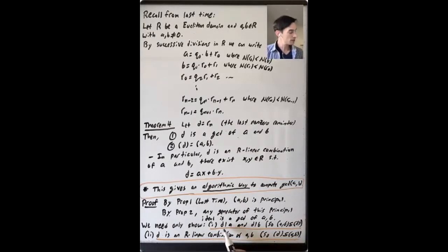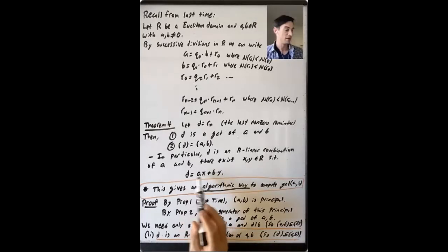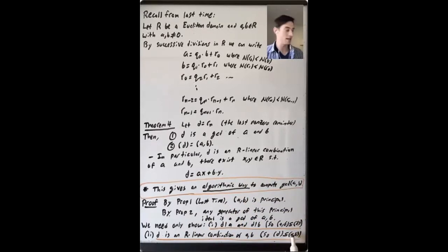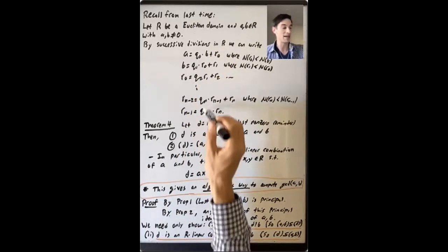We want to show that the ideal generated by A and B equals the ideal generated by R_n, the last non-zero remainder, and we'll do this by showing containment both ways. First, we show D is a common divisor of A and B — meaning the ideal generated by A and B is contained in the ideal generated by D. Then we show containment the other way by showing D is in the ideal generated by A and B, i.e., D equals A·X plus B·Y for some X, Y in R. Together, these show the ideals are equal and D is a GCD.